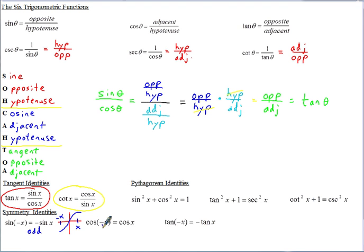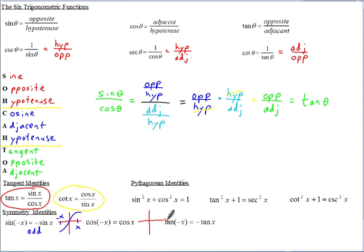However, cosine — when you plug in negative x, you still get the same thing, cosine, because cosine is an even function.